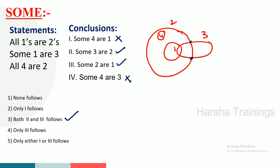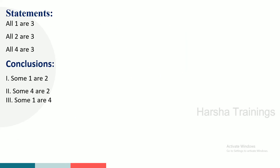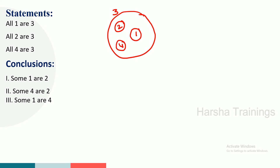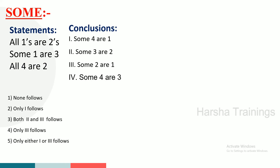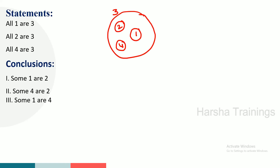Option three is the right answer — both two and three follow. If you have fundamentals clear, problems will be easy to solve. Coming to the next problem: all 1 are 3. Next statement: all 2 are 3 — but 1 and 2 have no direct relation. Next: all 4 are 3 — 4, 2, and 1 have no direct relation. Now let us check the conclusions. First conclusion: some 1 are 2 — some 1 are 2.